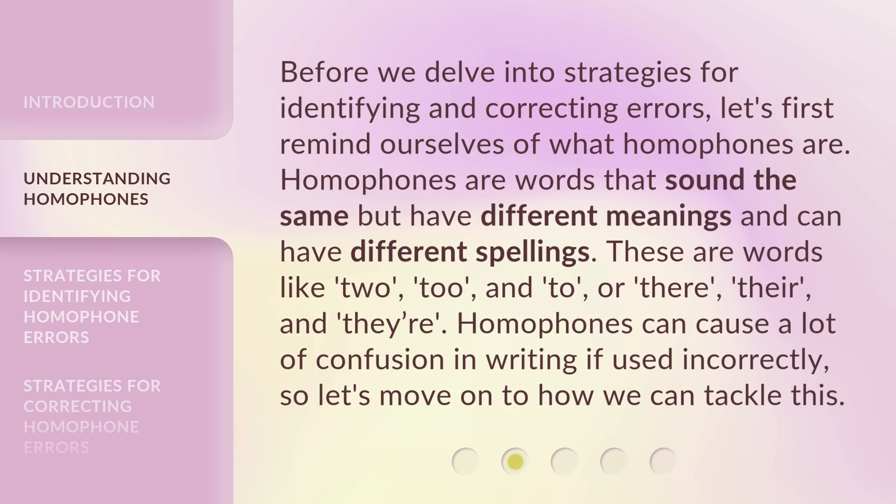Before we delve into strategies for identifying and correcting errors, let's first remind ourselves of what homophones are. Homophones are words that sound the same but have different meanings and can have different spellings — words like 'to,' 'two,' and 'too,' or 'there,' 'their,' and 'they're.'